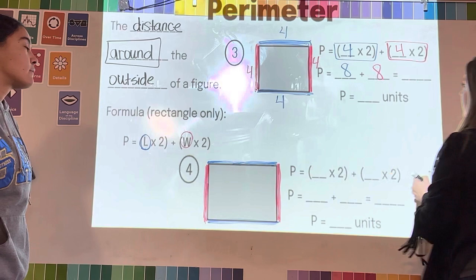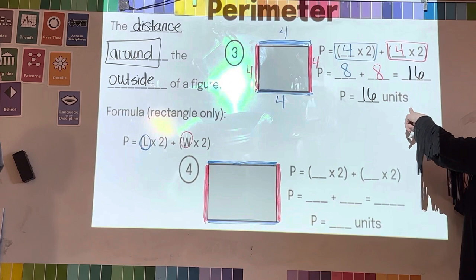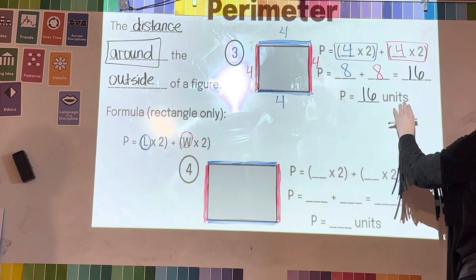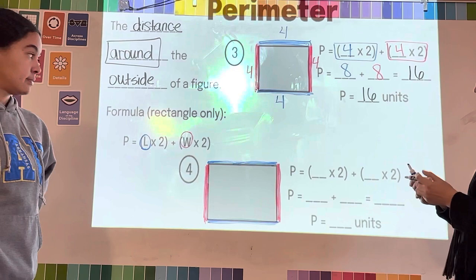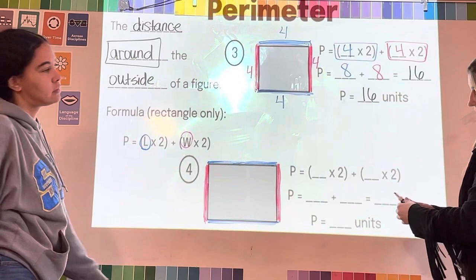So if you notice, this one just says units. We're not doing units squared because we're not counting the inside. Whenever it's perimeter, it's just whatever it is: units, centimeters, inches, whatever it is. Go ahead and look at shape number four.